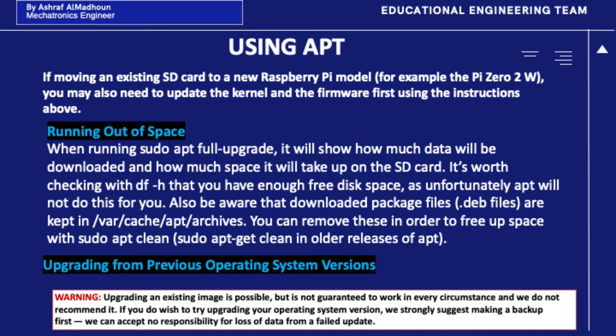When you are running out of space, running sudo apt full-upgrade will show how much data will be downloaded and how much space it will take up on the SD card. It's worth checking with df -h that you have enough free space, as unfortunately APT will not do this for you. Also be aware that downloaded package files are kept in the archives, and you can remove them to free up space with sudo apt clean.